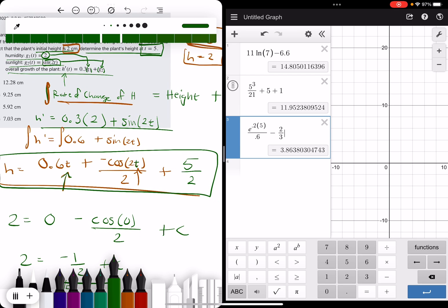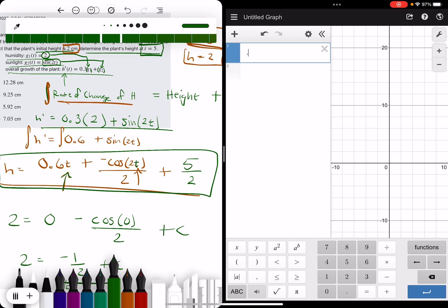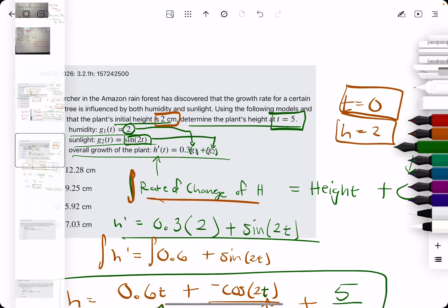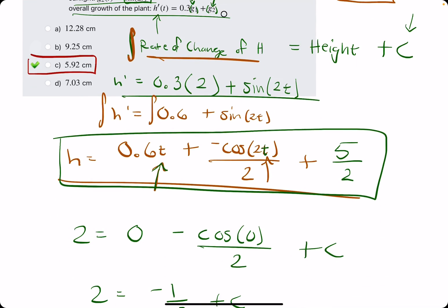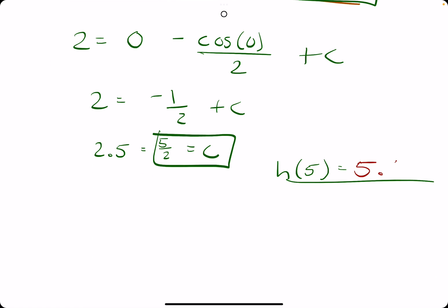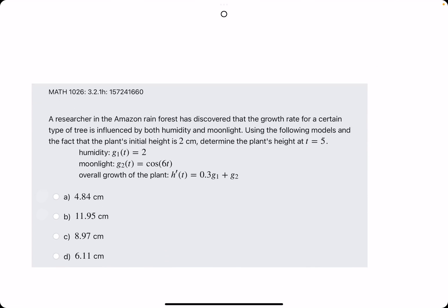Plugging in the value of 5 in place of t to this function we have boxed off, we have 0.6 times 5 minus cosine of 2 times 5 divided by 2 plus 5 over 2. And we get 5.91 or 5.92 if we round. So option C is our best answer. Let's go ahead and do one or two more examples here.